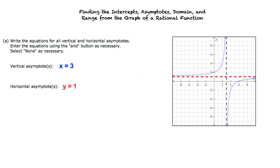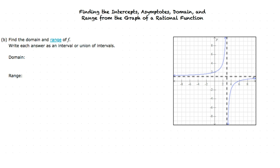Great work — you're starting to get the hang of it. Now let's look at part B to determine the domain and range. For rational functions, the domain is the set of all real numbers except for the values of the vertical asymptotes. Because our vertical asymptote is x equals 3, the domain is all real numbers except x equals 3. Applying the same logic to the range: because our horizontal asymptote is y equals 1, the range is all real numbers except y equals 1.